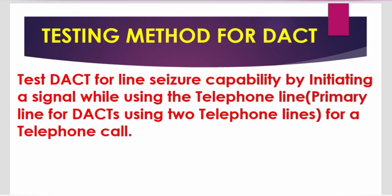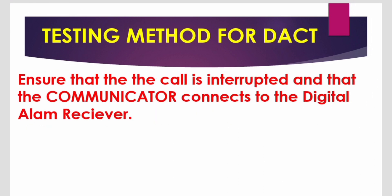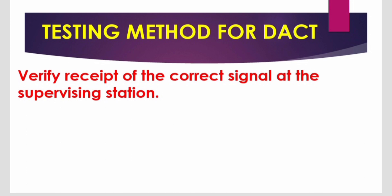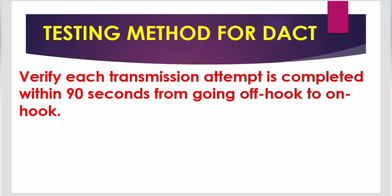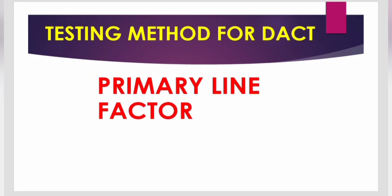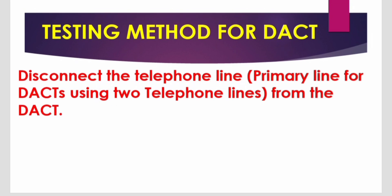While using the telephone line as the primary line for the DACT using two telephone lines, ensure that the call is interrupted and that the communicator connects to the digital alarm receiver (DACT), or verify receipt of the correct signal at the supervising station. Verify each transmission is completed within 90 seconds from going off hook to on hook.